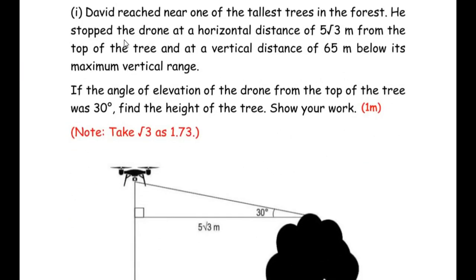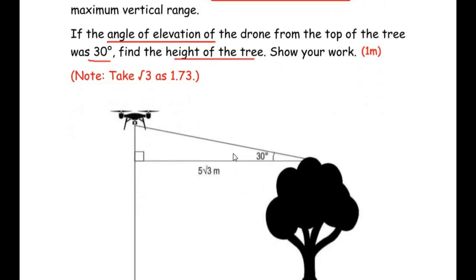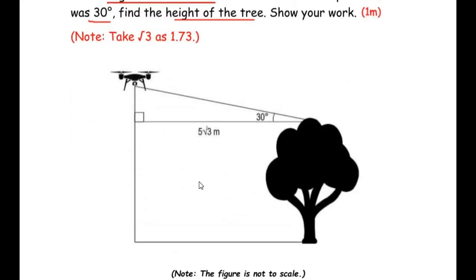The first sub-question: David reached near one of the tallest trees in the forest. He stopped the drone at a horizontal distance of 5√3 meters from the top of the tree and at a vertical distance of 65 meters below its maximum vertical range. If the angle of elevation of the drone from the top of the tree was 30 degrees, find the height of the tree. Show your work. Note: take √3 as 1.73. This is for one mark.